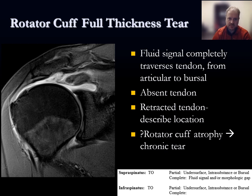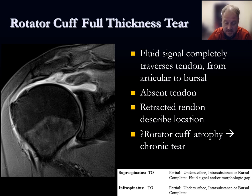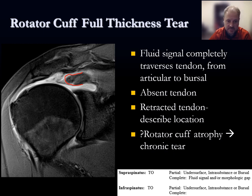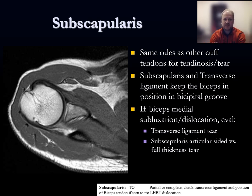A full thickness tear is where fluid signal completely traverses the tendon from articular to bursal side. Additional descriptors include whether the tendon is absent or retracted, and if retracted, where exactly the tendon stump is located. On chronic tears, note any muscle atrophy. On coronal images — especially when there's substantial joint fluid or bursal fluid — you can find and localize the retracted tendon stump, which is satisfying to identify precisely. The subscapularis has the same rules for tendinosis and tear.